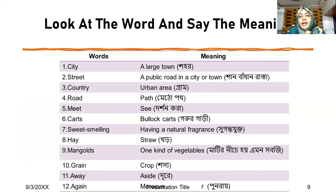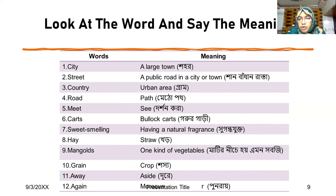Look at the words and say the meaning. City — that means a large town. Street — a public road in a city or town.